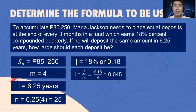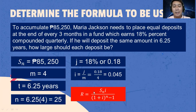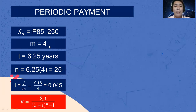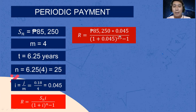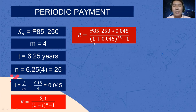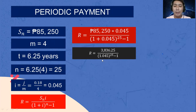Now let's substitute the given into the formula: R equals 85,250 multiplied by 0.045 divided by the quantity of 1 plus 0.045 raised to 25 minus 1. First step: multiply 85,250 by 0.045, which equals 3,836.25. Then add 1 plus 0.045 to get 1.045.